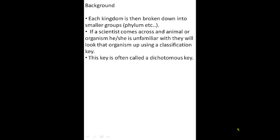If a scientist comes across an organism that has been discovered before but they don't know what it is, they can use a classification key to figure it out. Another word for a classification key is a dichotomous key. You might think: why not just Google it? Scientists do that nowadays, but classification keys were used a lot more before the internet. It is a Cambridge standard we need to know for the test.